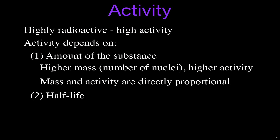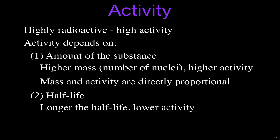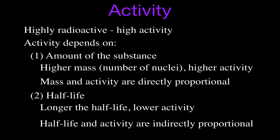The half-life and the activity are inversely proportional. If you have a sample with a half-life of billions of years, it's going to be decaying less often, and therefore you're going to have a lower activity. As the half-life goes up the activity goes down, and as the half-life goes down the activity goes up — they go in opposite directions.